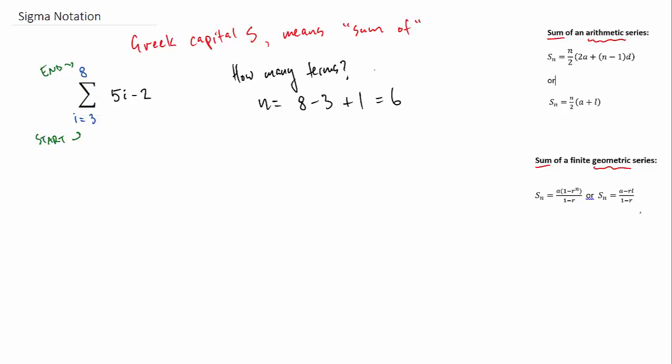So the first thing to try to do is figure out how many terms are we dealing with? That'll give us our n value.